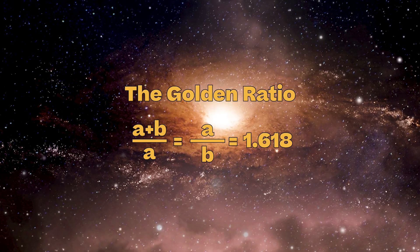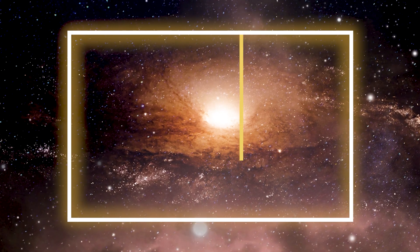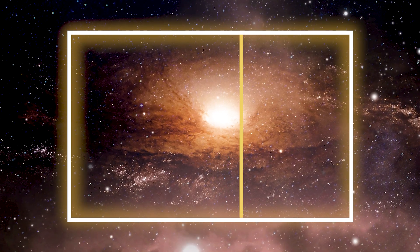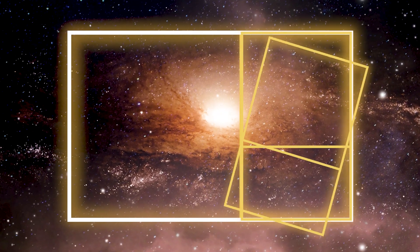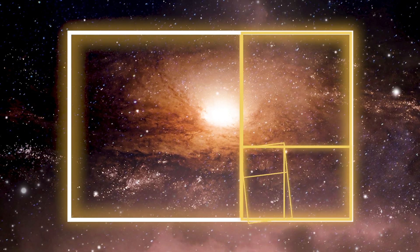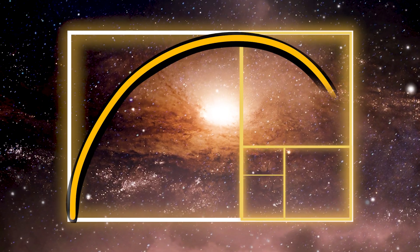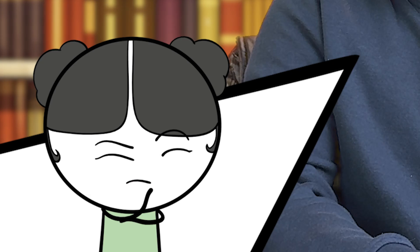Math is everywhere — really. Take a look at this: it's called the golden ratio. It's basically a special way of dividing something, like a rectangle, so that one part fits perfectly with the other. It's often considered the perfect illustration of beauty, and it gives us the Fibonacci spiral. That's cool and everything, but why does it matter? I'll tell you after the opening.